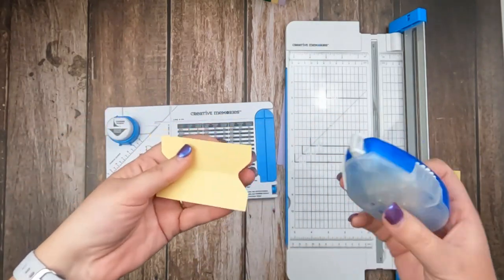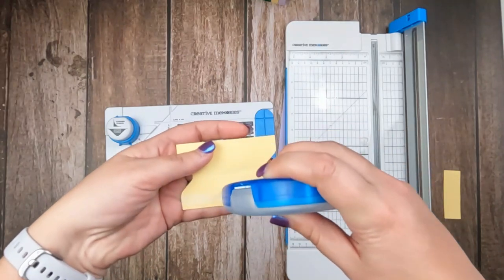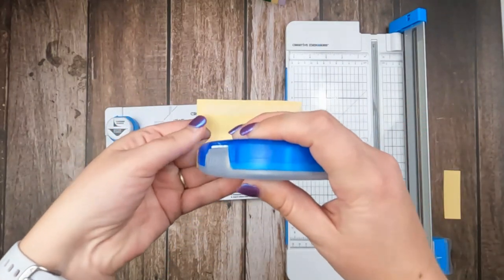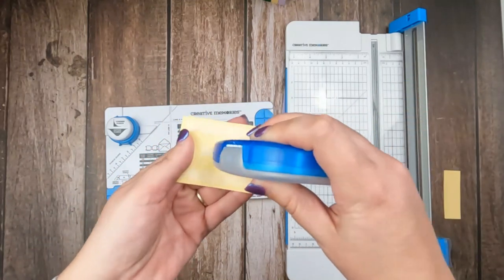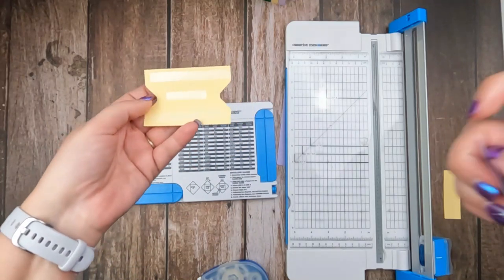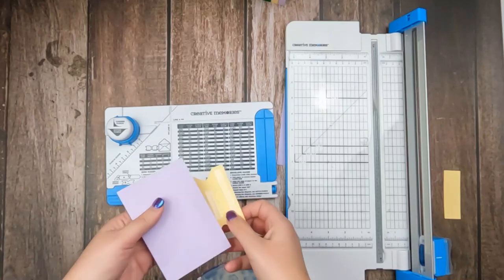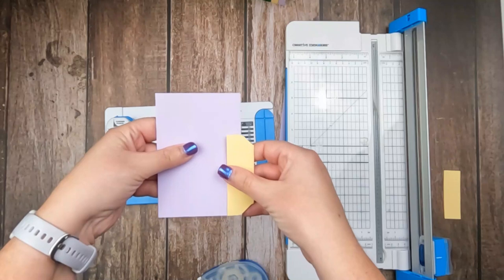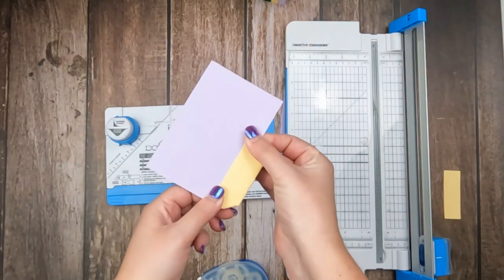And just like that, so you're like, what did I just make? Well, if you fold it, you have now created a tab. So simple, so easy. So if you're going to adhere this, you're going to want to put your regular tape runner all along the base of both sides of your tab.